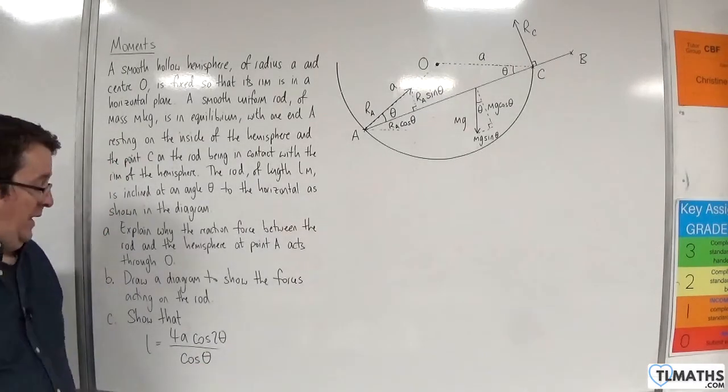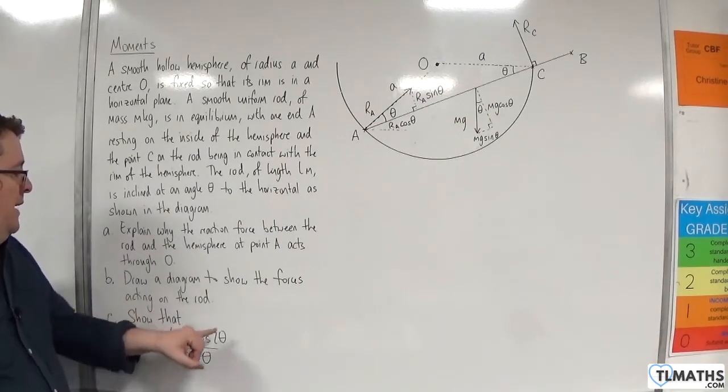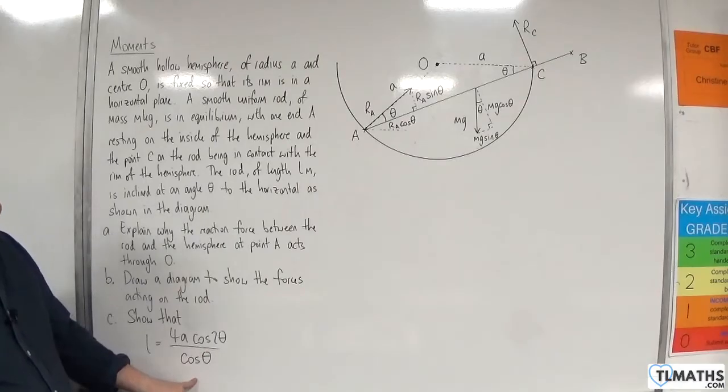Part C. Show that L is equal to 4A cosine 2 theta over cosine theta.